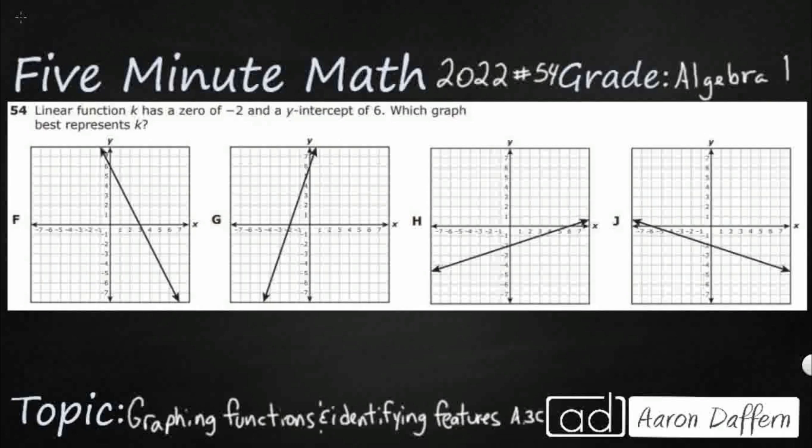So we have linear function k here represented. It has a zero of negative 2 and a y-intercept of 6, so we need to find which graph best represents k.